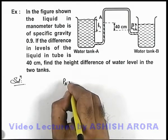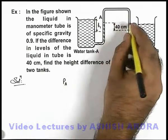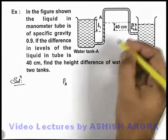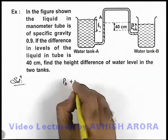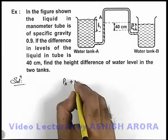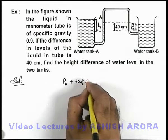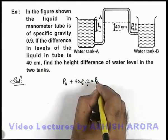Then pressure at point B can be given as this is the same pressure which is at this point also. So this can be written as plus ρg. As distance is 40 centimeters, I can write 40 multiplied by ρ of liquid into g. This should be equal to PB.